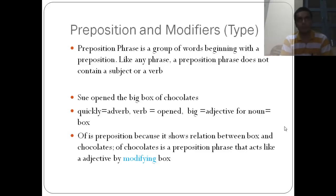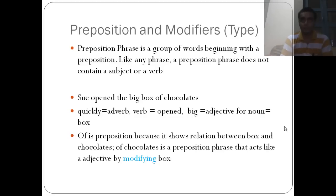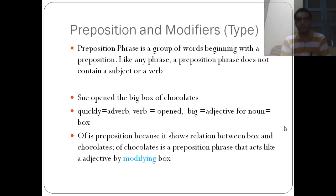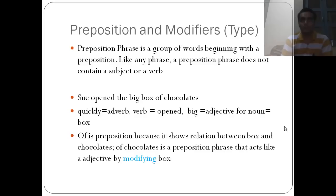Let me give a brief introduction to prepositions and modifiers. A prepositional phrase is a group of words beginning with a preposition, and like any phrase it does not contain a subject or verb. In the example 'Sue quickly open the big box of chocolates,' 'quickly' modifies 'opened' and 'big' is an adjective for the noun 'box.' Here, 'of' is a preposition showing the relation between 'box' and 'chocolates' — so 'of chocolates' is a prepositional phrase that acts as an adjective modifying 'box.'